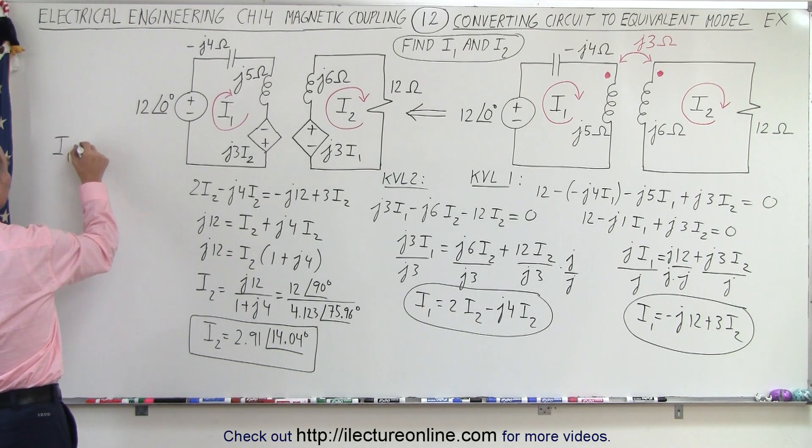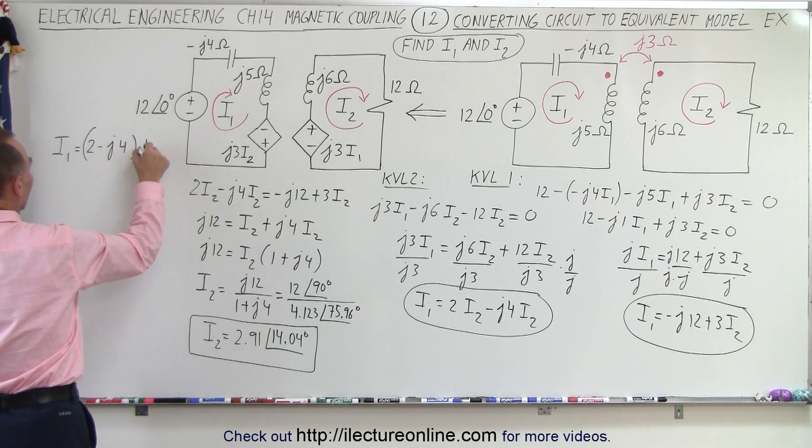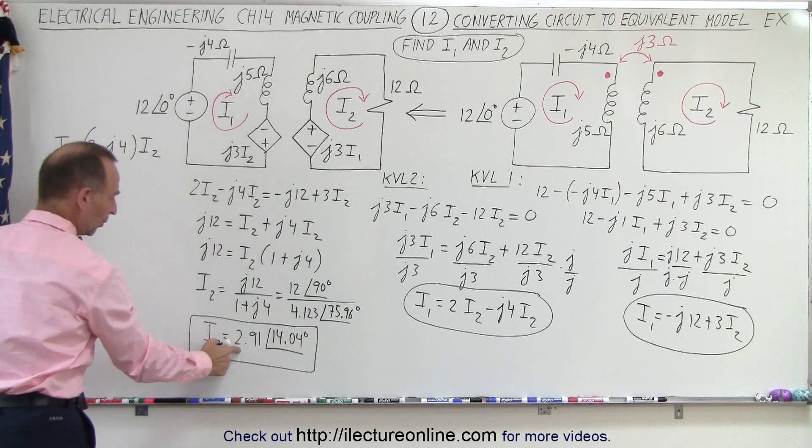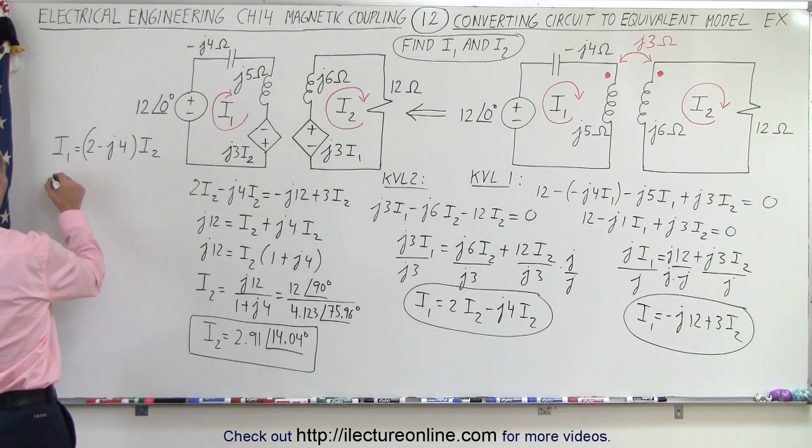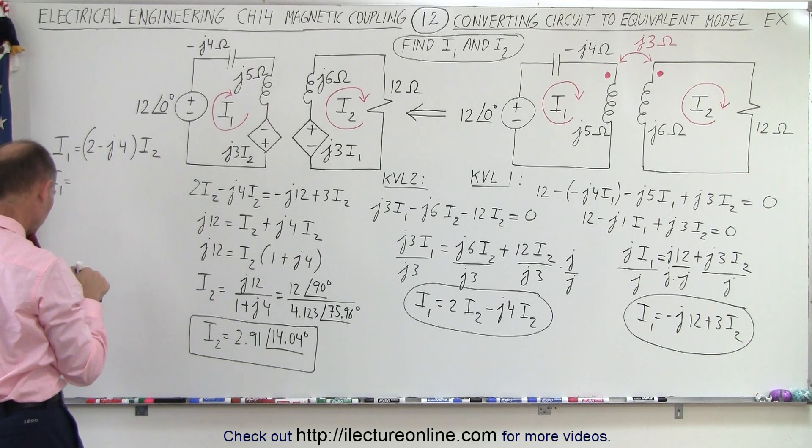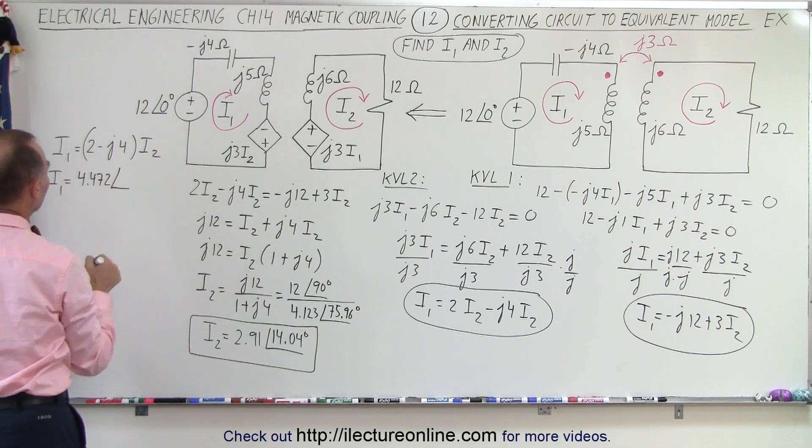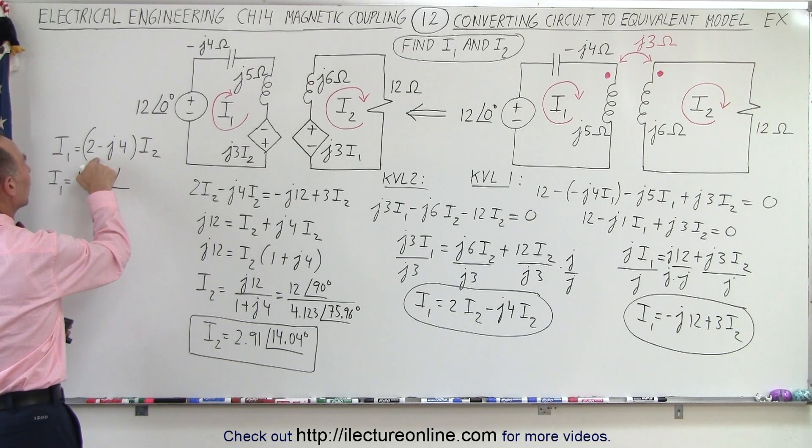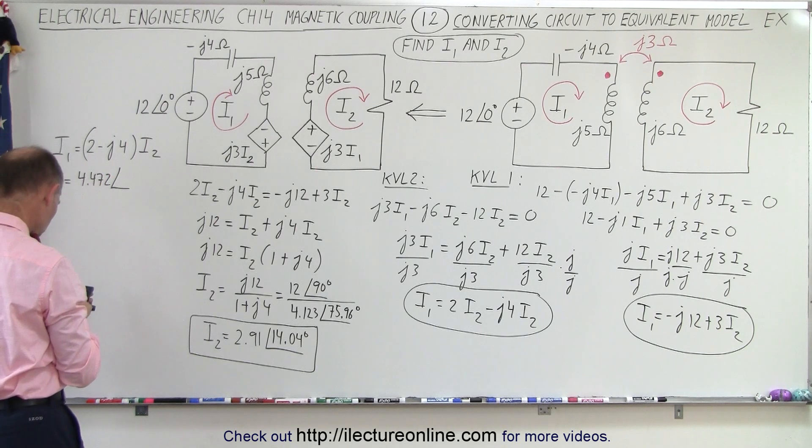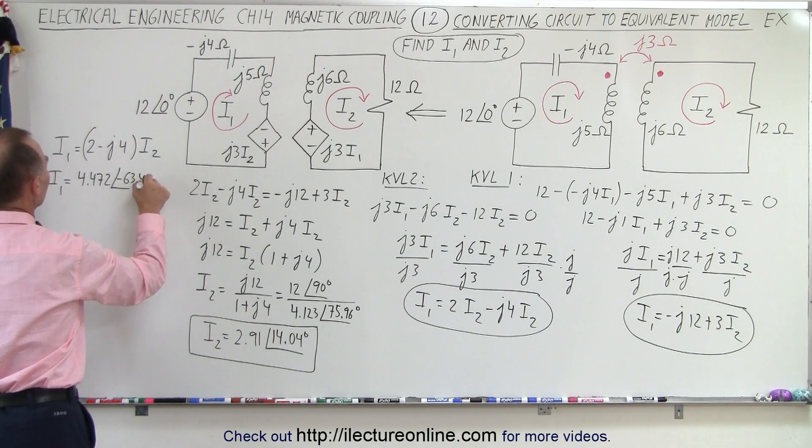We have I1 is equal to 2 minus J4 times I2. And I2 is solved right here. So what I can do is I can then write that I1 is equal to this here. That would be 16 plus 4, that's 20. Take the square root of 20, which is 4.472. 4.472 with a phase angle of minus 4 and 2, that would be minus 2. Take the inverse tangent. That gives us minus 63.43 degrees.